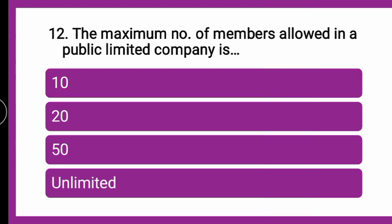Next question: The maximum number of members allowed in a public limited company is DASH — whether 10, 20, 50, or unlimited. The correct answer is unlimited, because since it is a public limited company, there is no limit for the number of members as it is not run completely by private investors.